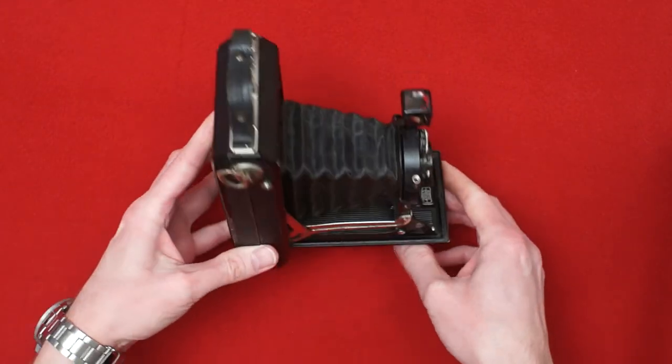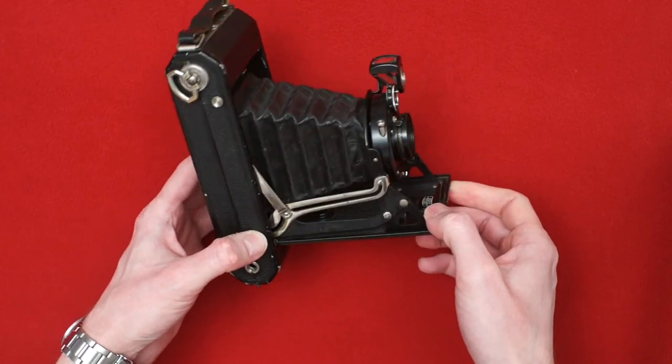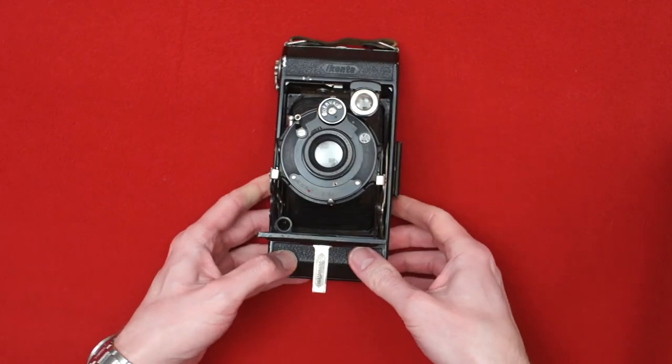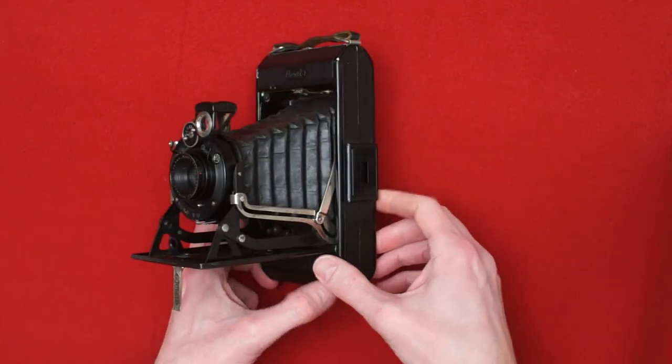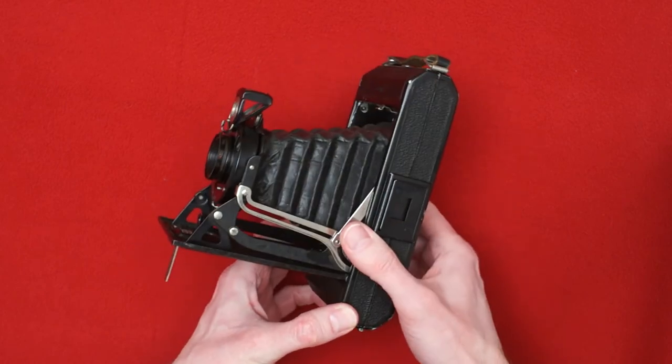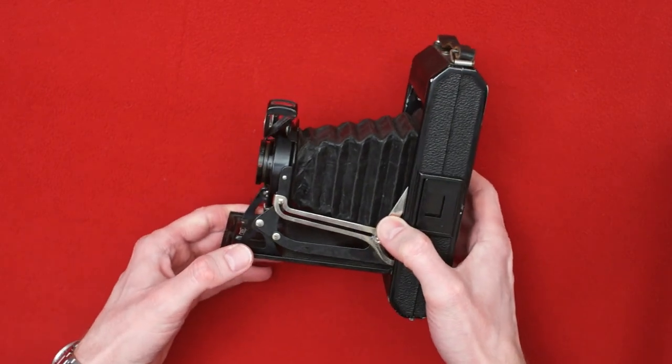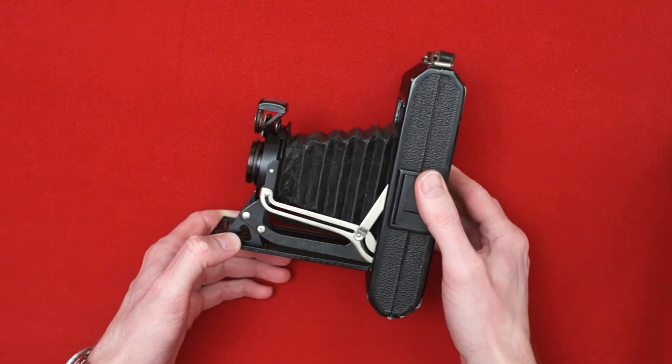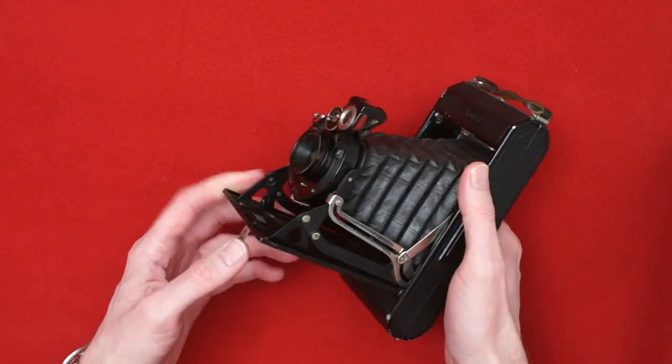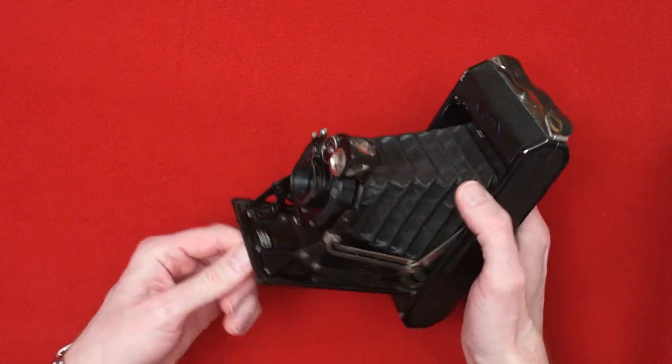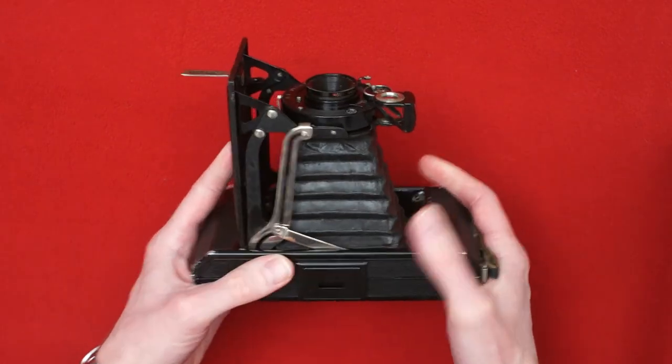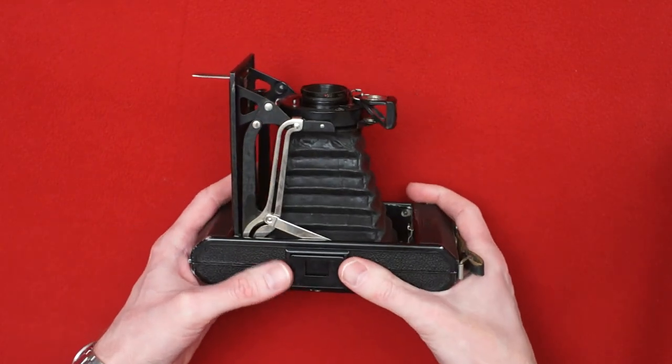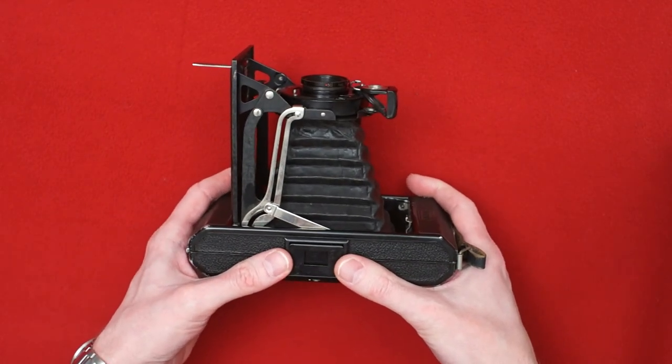This is the very first model that came on the market that used the Iconta name. Zeiss Icon had very similar cameras in production before that. In the late 1920s there was an Icarette and a Cocarette, very similar cameras, just different name. This particular model came along I believe in the second half of 1929.